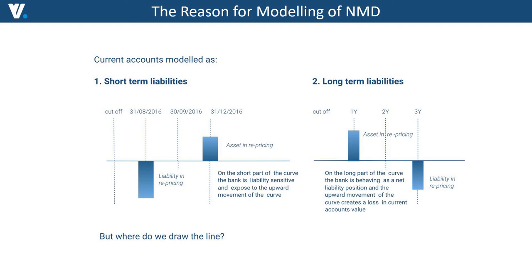Imagine we have an asset with five years maturity and five years overall duration. We have obvious exposure to the upward movement of the curve, because the upward movement creates a loss in economic value of the bank. We then try to offset it by modeling non-maturity deposits up to five years of average duration. This offsets the time bucket sensitivity and mitigates the duration gap.